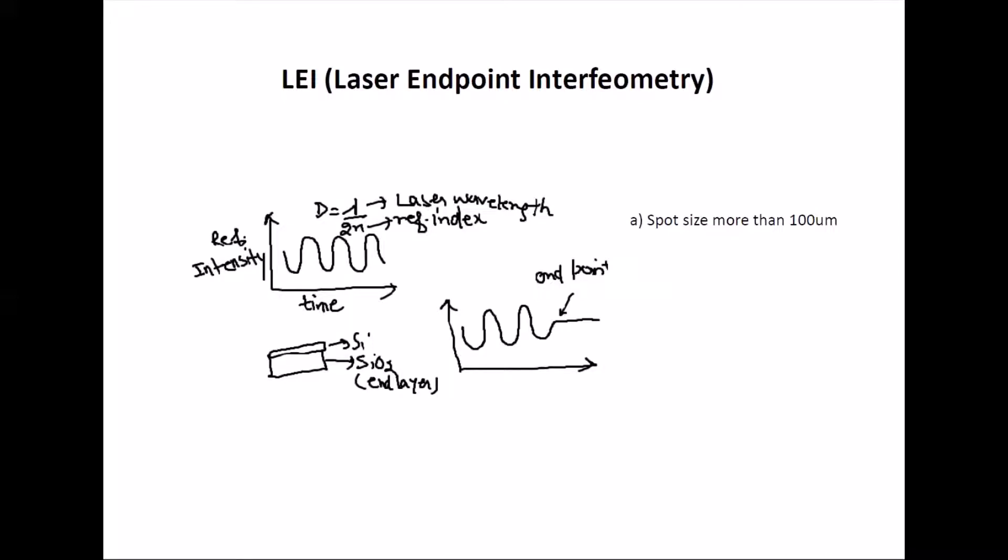The second industrial standard is Laser Endpoint Interferometry. You are measuring the reflective intensity with time. Let's say you are etching silicon with some process and you have silicon oxide as an end layer. As you are etching constantly you'll see peaks and valleys, but when you reach silicon oxide the gases don't react much with it compared to silicon, so you see a flat state like this which is your endpoint.